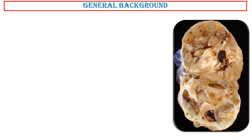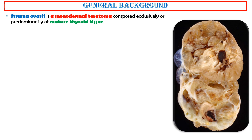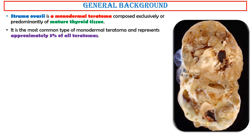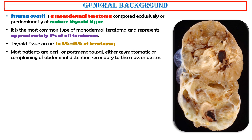General background. Struma ovaryi is a monodermal teratoma composed exclusively or predominantly of mature thyroid tissue. It is the most common type of monodermal teratoma and represents approximately 3% of all teratomas. Thyroid tissue occurs in 5% to 15% of teratomas. Most patients are peri- or postmenopausal, either asymptomatic or complaining of abdominal distension secondary to the mass or ascites.